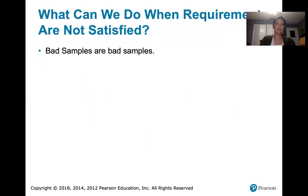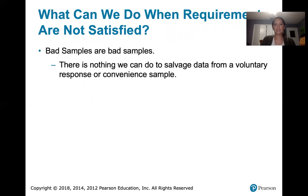So what do we do if those requirements aren't met? First of all, there's nothing that we can do about the first two requirements. If we have a bad sample, it's a bad sample. There's nothing we can do to salvage the data from a voluntary response or convenience sample. We can do all the data analysis we want, but the results will not be generalizable to anyone outside that sample.